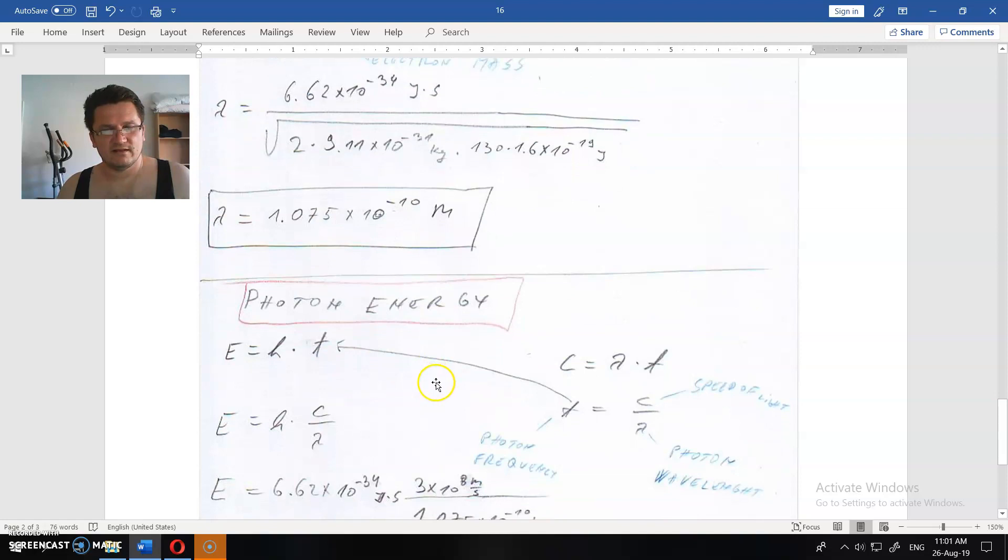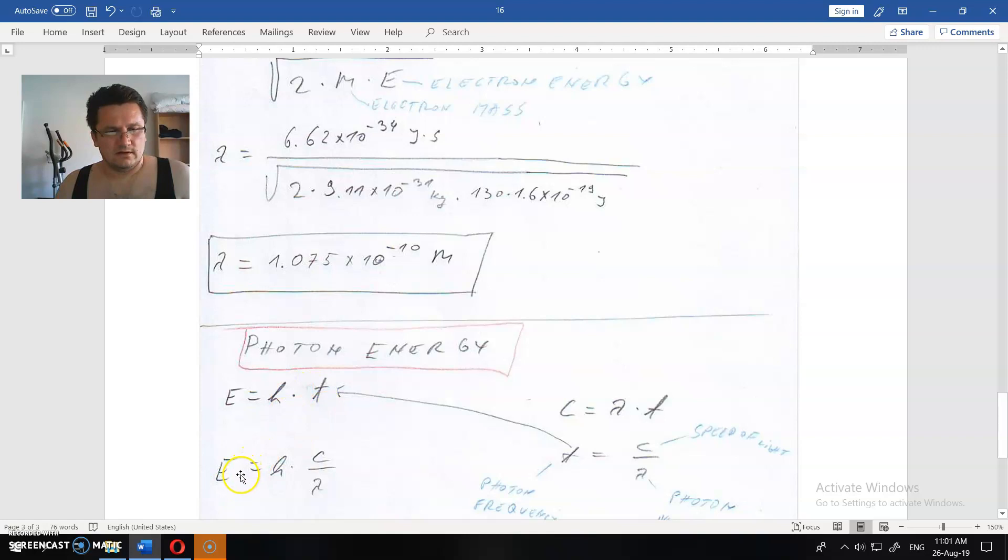So we will rewrite this as energy of the photon is Planck constant times c, this is speed of light, divided by the wavelength. And this is the speed of light, wavelength of frequency, and so on and so forth.